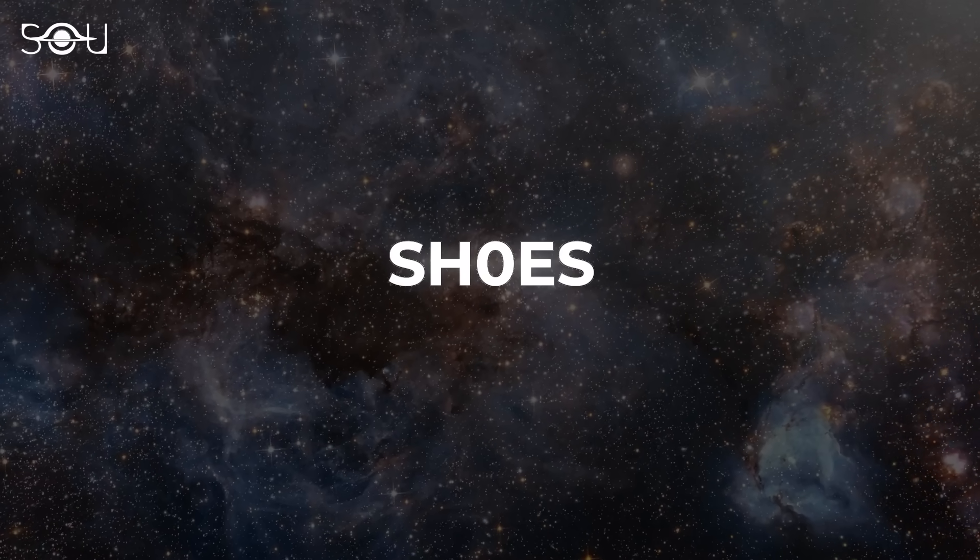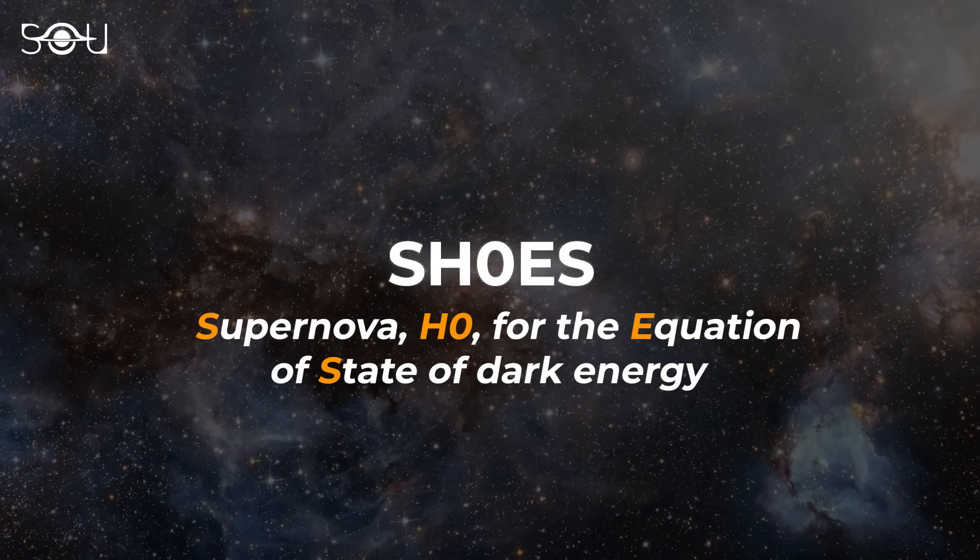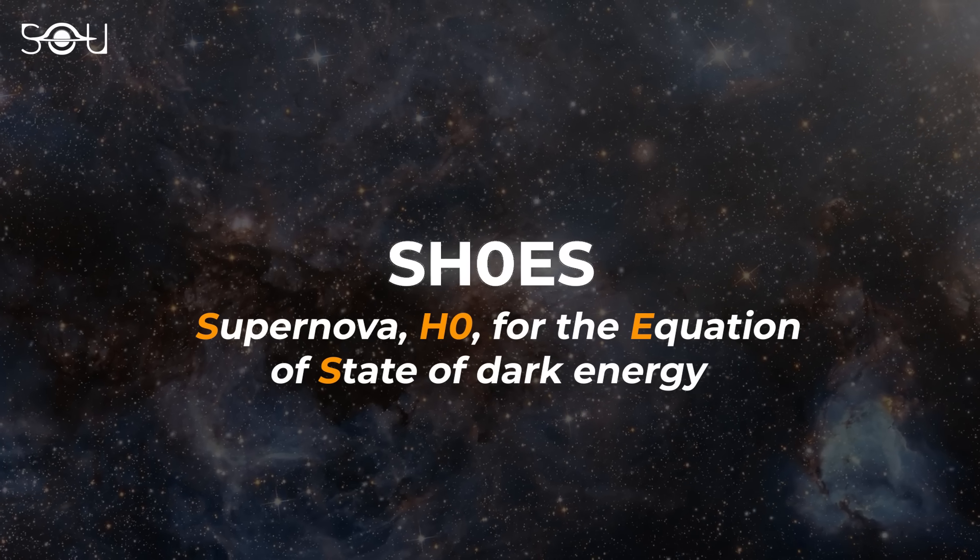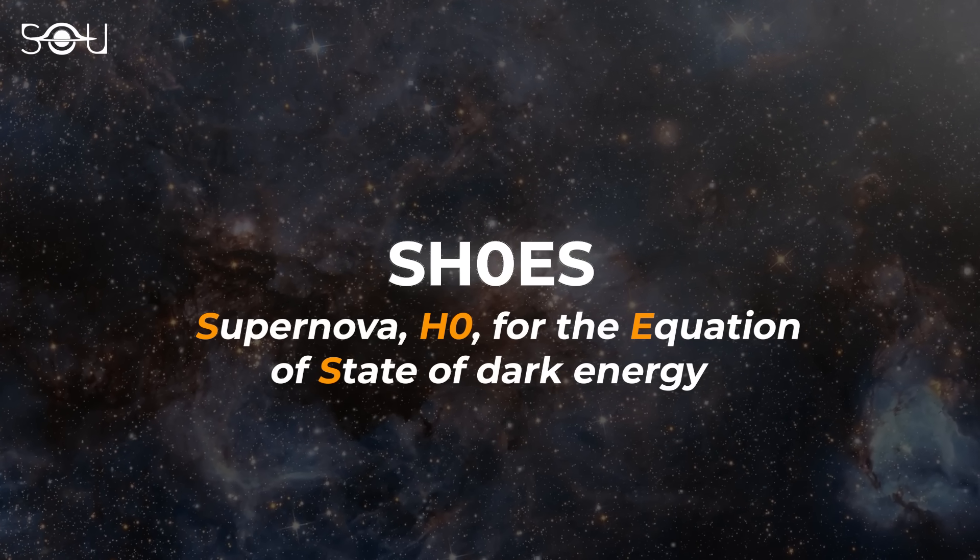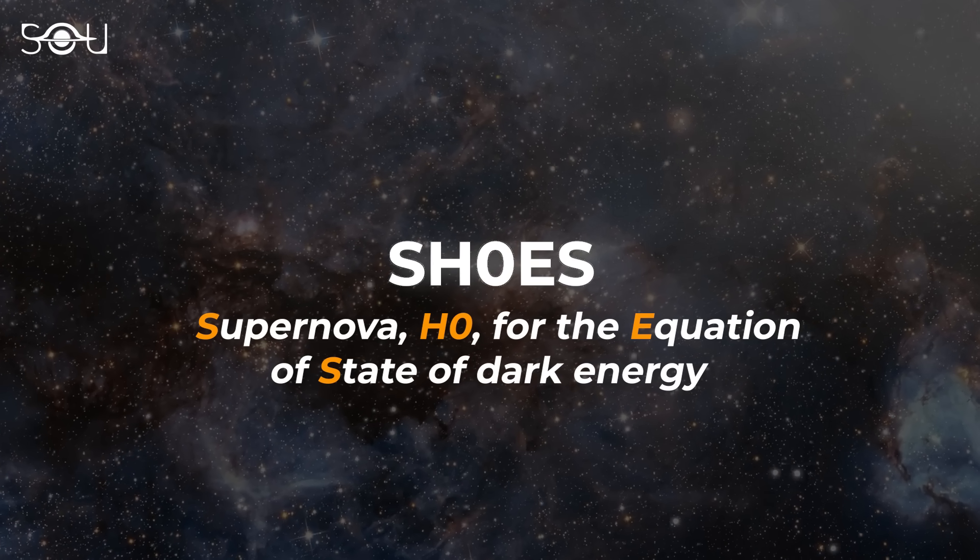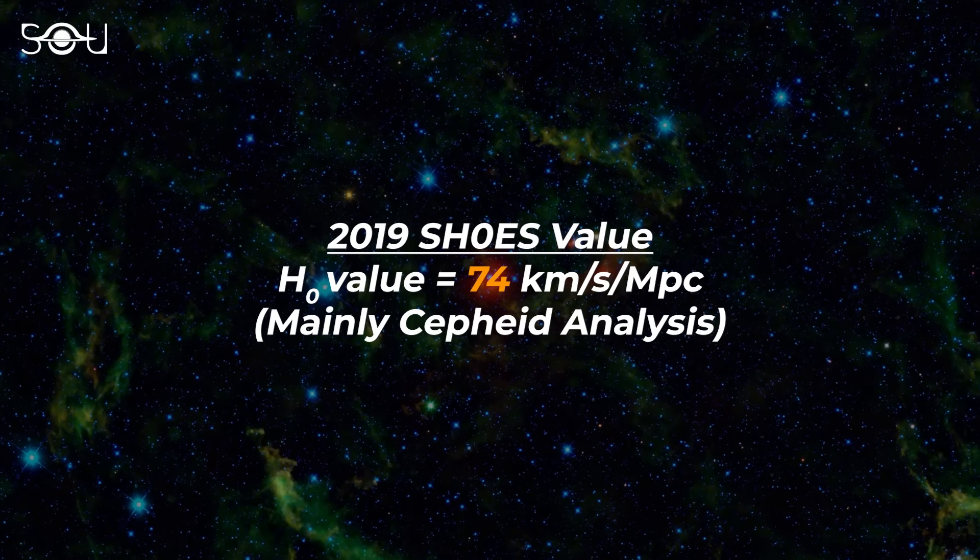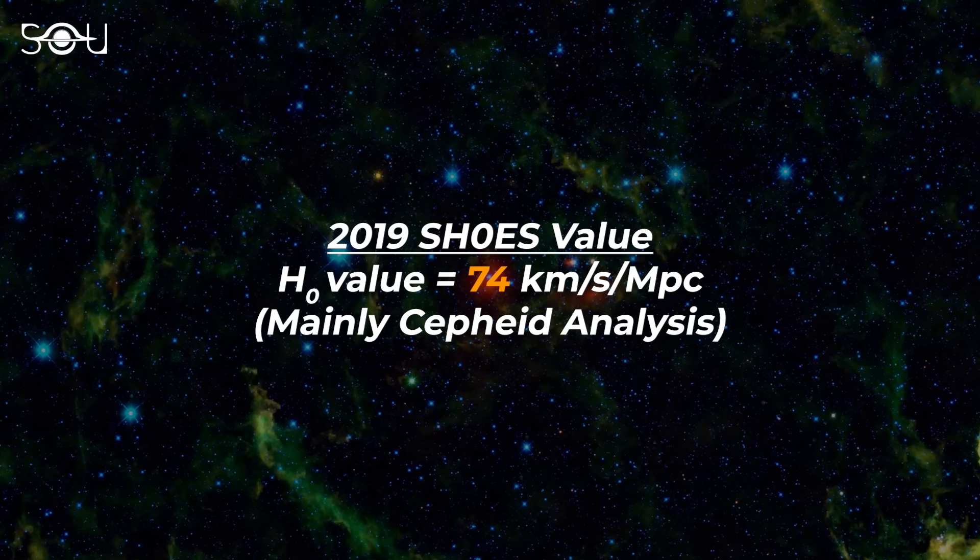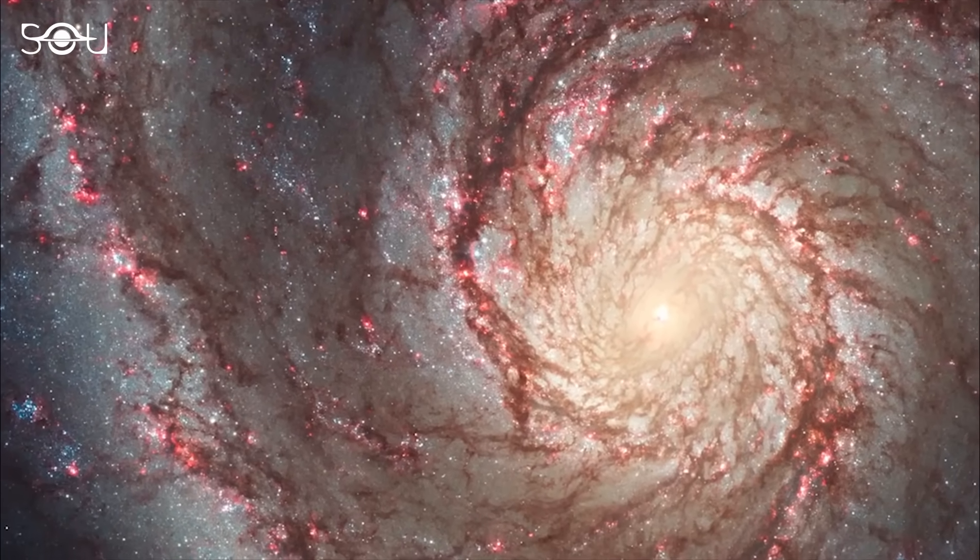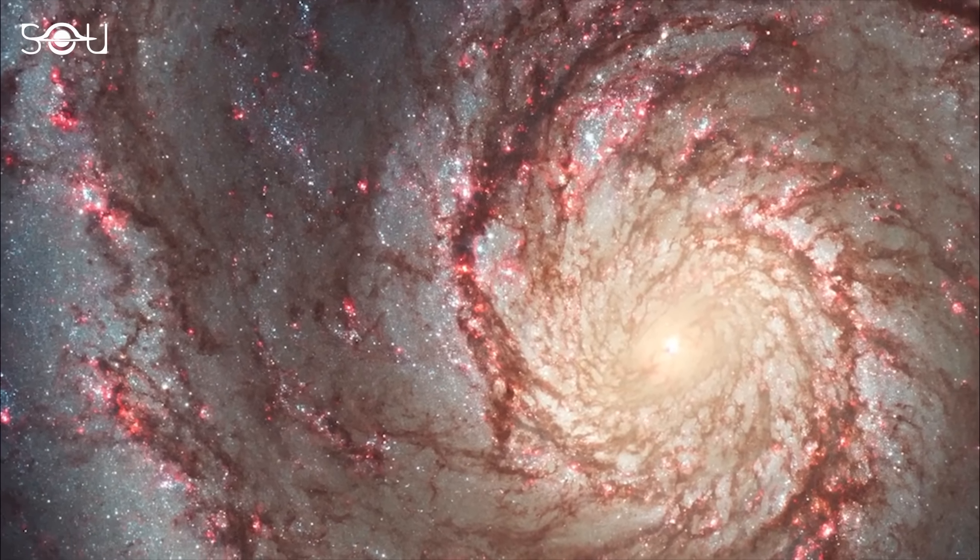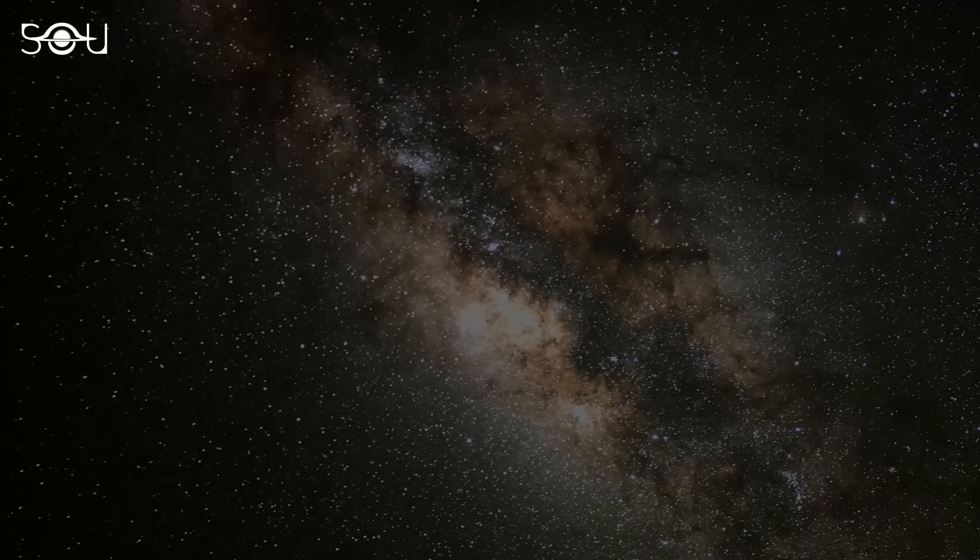The Hubble Shoes Program, which stands for Supernova H0 for the equation of state of dark energy, has made significant contributions to calculating the universe's expansion rate using these supernovae. In 2019, the Shoes team reported a value of Hubble constant around 74 km per second per megaparsec. The Shoes project considers the galaxies lying within 2 billion light-years away, which means that it measures the present expansion rate of the universe.